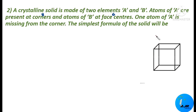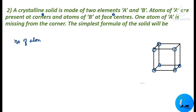A atoms are present in only seven corners. Each corner atom is shared by eight other unit cells, so the contribution is 1/8 per corner atom. Therefore, number of A atoms = 7 × 1/8 = 7/8.